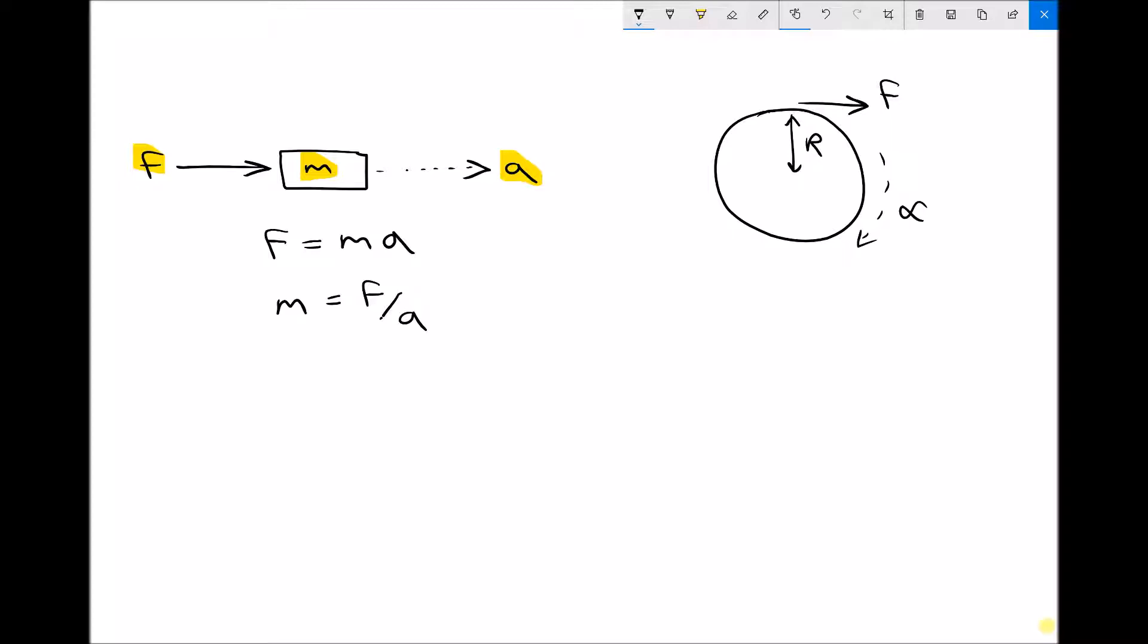Now, what that tells us about mass M is that the mass of an object relates to its resistance to acceleration. What I mean by that is that the bigger the mass, the more force is required to make it accelerate. Or said a different way, the bigger the mass under the same force is going to accelerate less. Larger masses have a greater resistance to acceleration, whereas small masses accelerate much more easily.